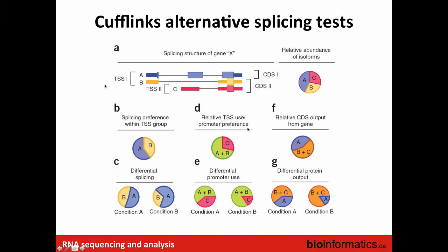Looking at a top diagram with a simple gene locus having three alternative transcripts: this is already pretty complicated but compared to a typical human locus it's still very simple. Many human loci will have ten or more alternative isoforms with subtle differences in transcript start site, polyadenylation site, and exon usage all mashed together. Cufflinks breaks this problem into three pieces.